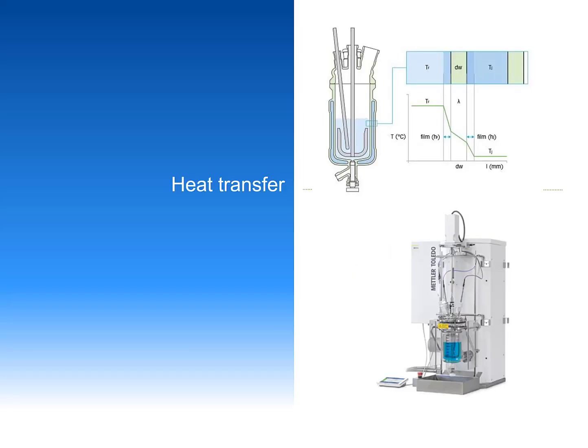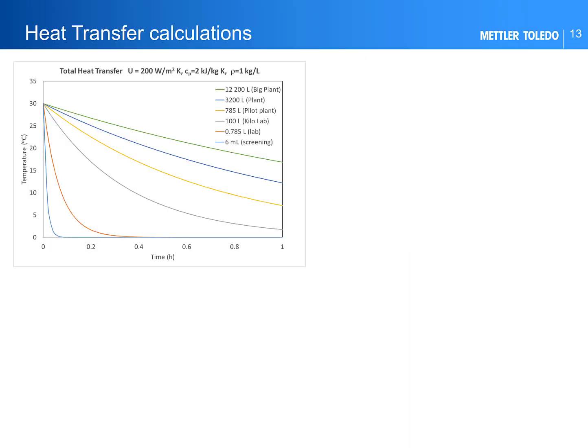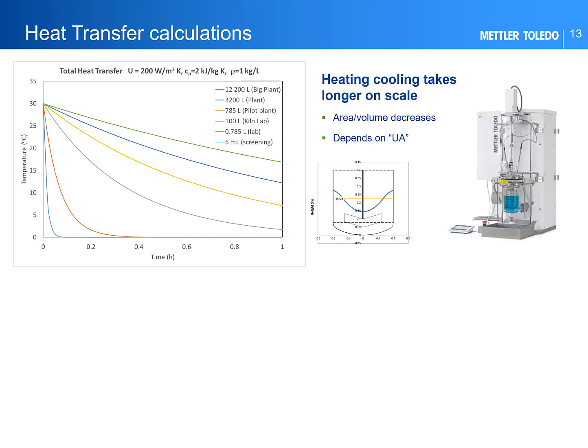Now I'll move on to talk about heat transfer, which is obviously important for safe operation on scale. As you're probably aware, the heat transfer performance generally drops as we increase in scale due to lower surface area per unit volume. The chart shows this for a range of scales — at small scale it takes a few minutes to cool from 30°C down to 0°C, whereas in a large vessel this can take several hours. This is related to the UA of the vessel.